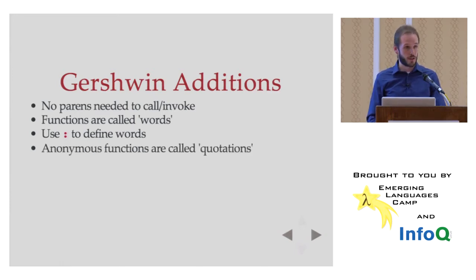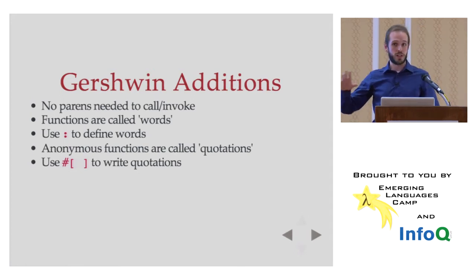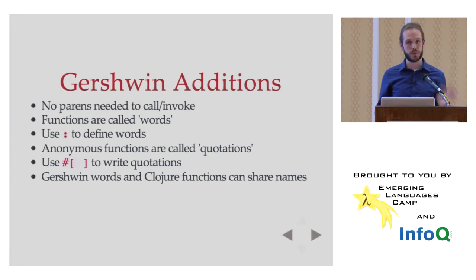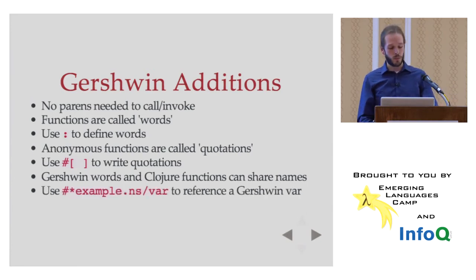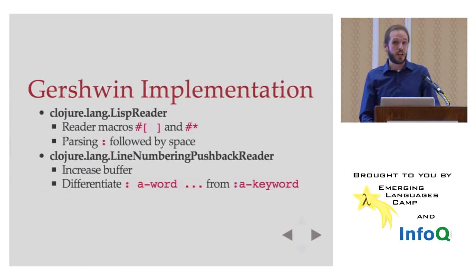And we'll see what that means when we look at some code examples. And there's no parens to call functions. That seems kind of counterintuitive that a LISP loses its parens. But they're still there. They have a different purpose. Functions aren't called functions in concatenative language. They're usually called words. So, we get the vocabulary right here. Functions are called words. And we use, in the fourth tradition, a colon to define words. And we also have anonymous functions. Those are called quotations. And we use this syntax, which is another reader macro, for writing quotations. These are the two kind of major additions that Gershwin brings to Clojure. A way to talk about functions as words, because they're going to behave differently than regular functions.